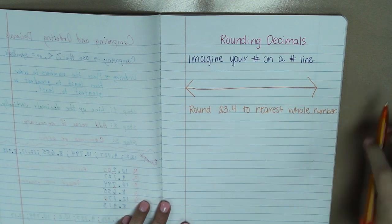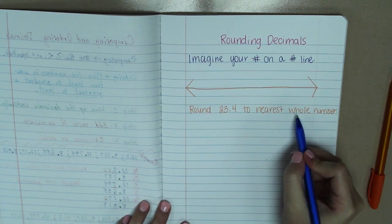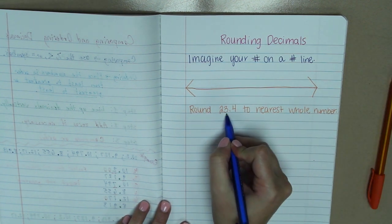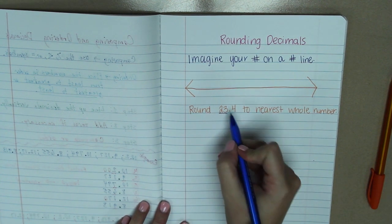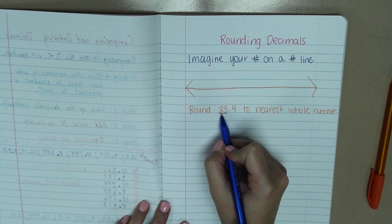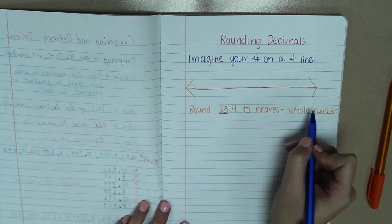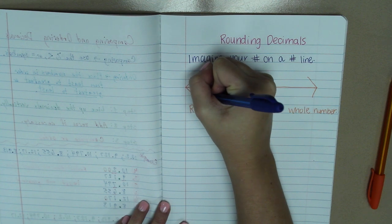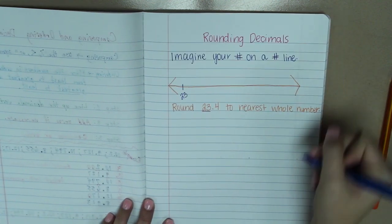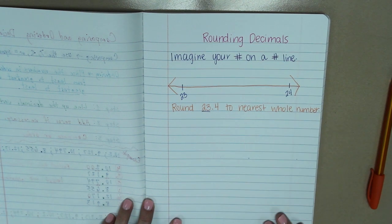Okay, so looking at the number 23 and 4 tenths, we know that the whole number is going to be everything before the decimal. So this decimal is either going to round to 23 or it's going to round up to 24. So on our number line, we're going to put 23 on the left side and 24 on the right side.